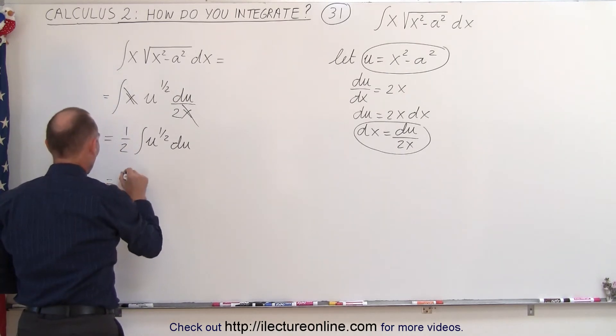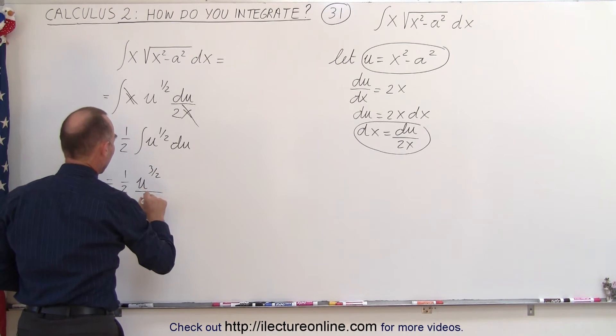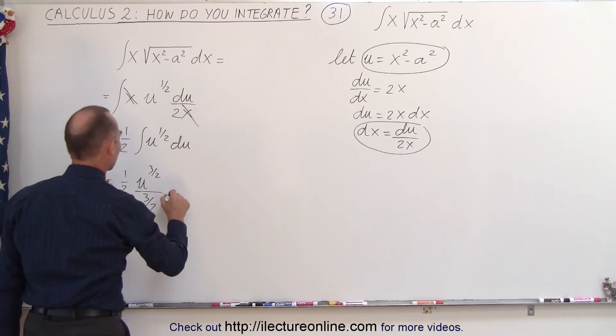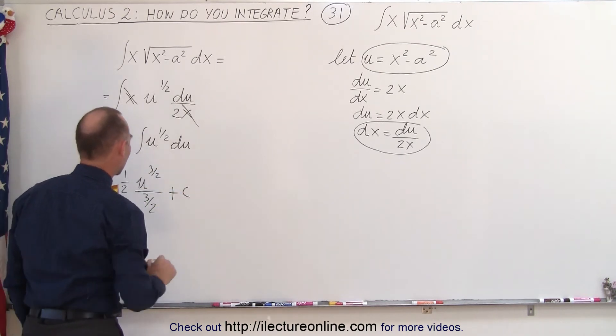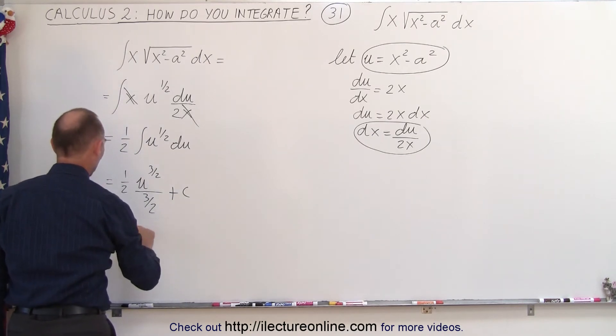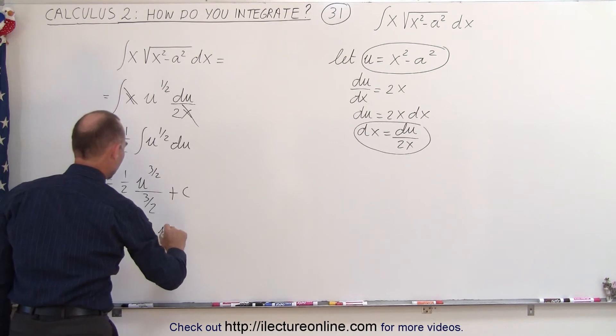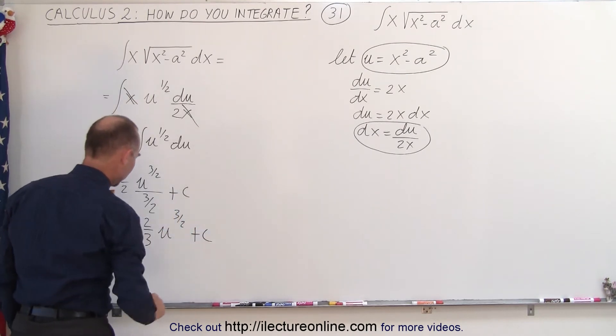So that becomes 1 half times u to the 3 halves power, divided by the new exponent, 3 over 2, plus a constant of integration, which is equal to 1 half times the inverse of that, 2 thirds times u to the 3 halves plus a constant of integration.